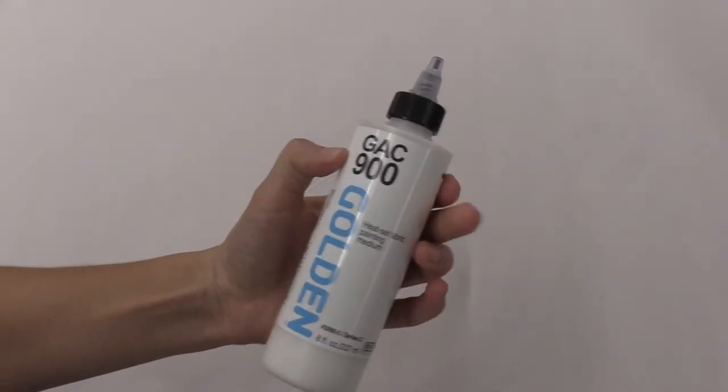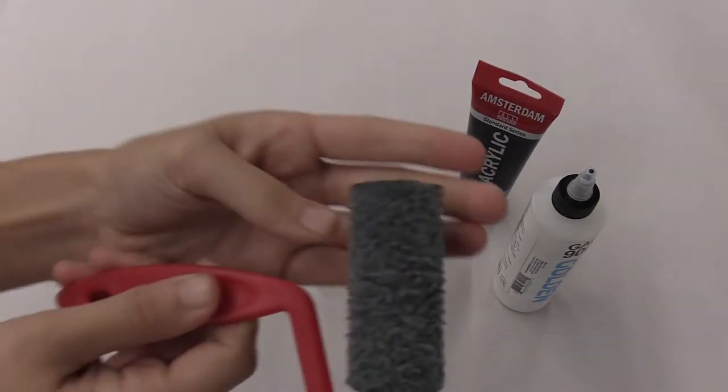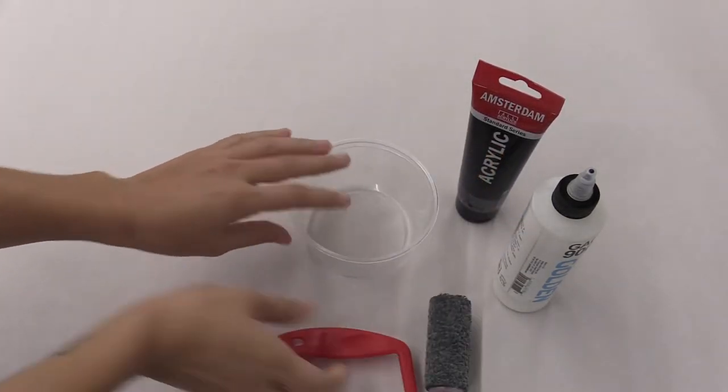You'll want to put down some paper underneath the surface where you'll be working to protect it. You'll need a bowl for mixing the GAC medium, acrylic paint - you can use any color - and you could use a foam roller such as this.